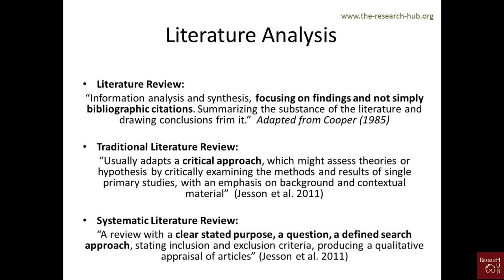A systematic literature review is a review with a clearly stated purpose. You will have research questions in mind before you start, a defined search approach for finding the papers you'll analyze, stated inclusion and exclusion criteria for your articles, and you will produce a qualitative appraisal of the articles in the end.